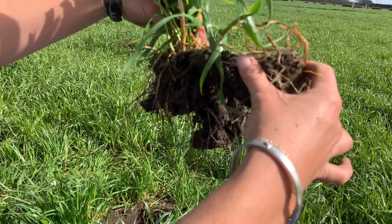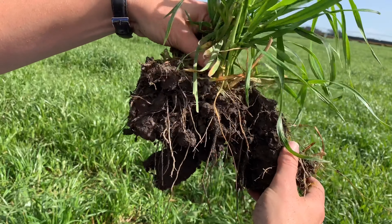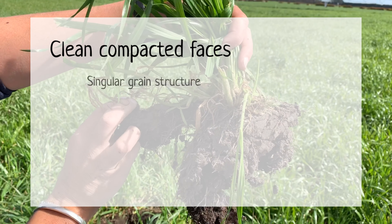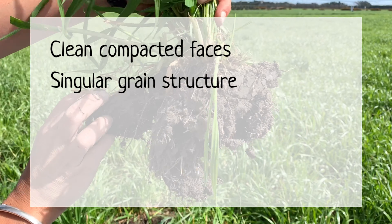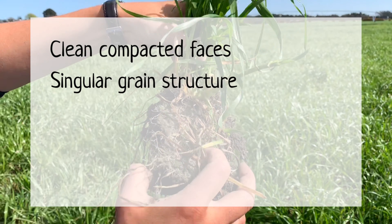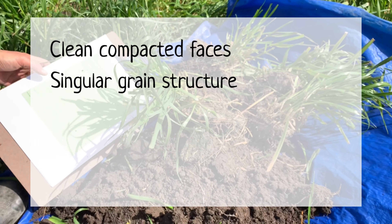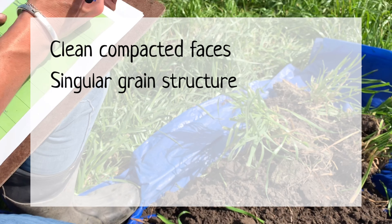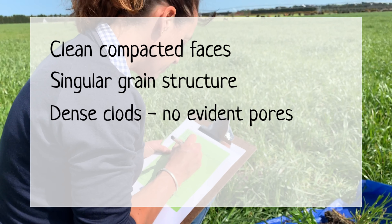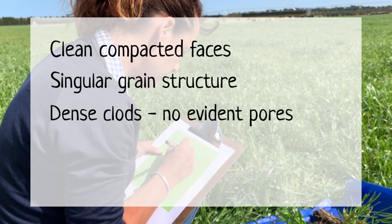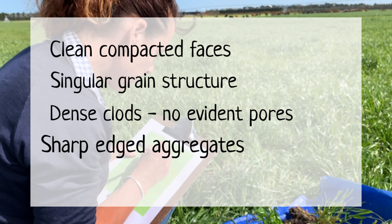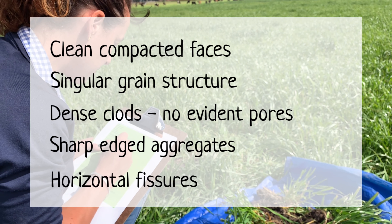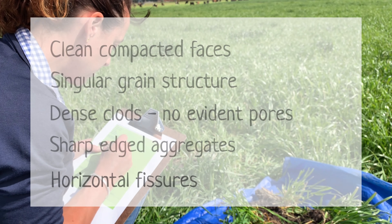Poor soil structure is characterized by clean compacted faces, singular grain structure with no cohesion of particles, low organic matter and humus, dense clods with no evident pores, sharp edged angular aggregates, horizontal fissures, and indications of compaction.